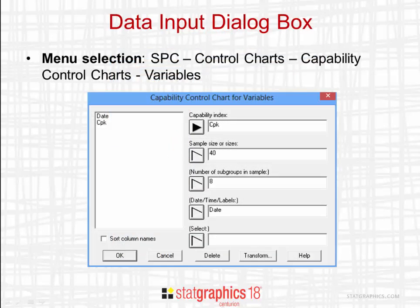To create a control chart for CPK in StatGraphics 18, you go to the main menu and select SPC, Control Charts, Capability Control Charts, Variables.